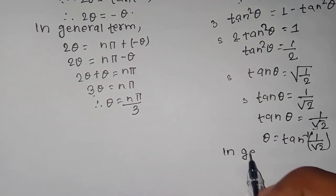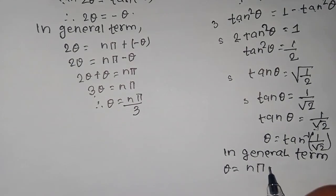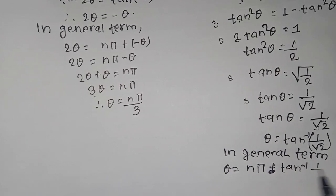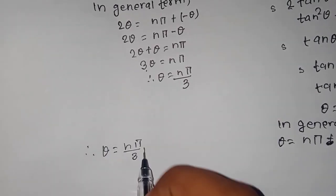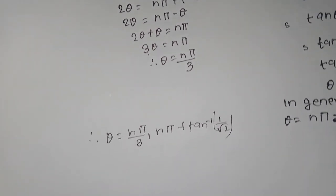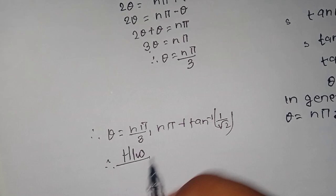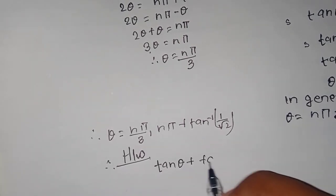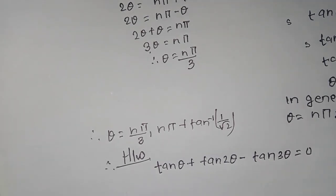In general, the general term gives theta equals n*pi plus or minus tan-inverse of 1 by root 2. So the tag value is n*pi plus tan-inverse(1 by root 2). Therefore tan(theta) plus tan(2-theta) minus tan(theta) equals zero. That's the complete solution.